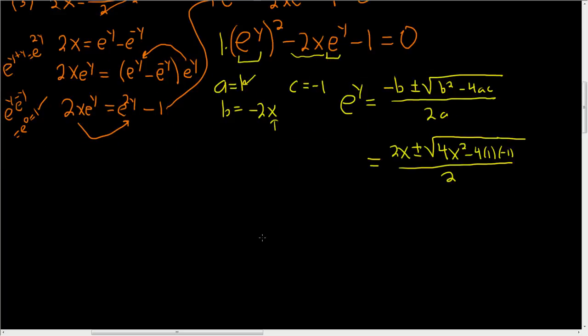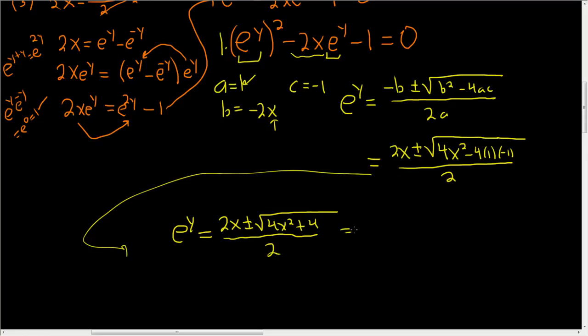Let's keep going. Let me write everything over here. So going over here, we have e^y equals 2x plus or minus the square root of 4x^2 plus 4 divided by 2. So this is 2x plus or minus. You can factor out a 4. So you get square root of 4, square root of x^2 plus 1 over 2. The square root of 4 is 2. So e^y is equal to 2x plus or minus 2√(x^2+1), all being divided by 2.